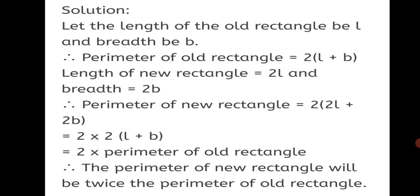We wrote the perimeter formula for the old rectangle and the new rectangle. Since the dimensions are doubled, we substituted 2L for length and 2B for breadth. We then substituted 2(L + B) as the perimeter of the old rectangle, and found that the perimeter of the new rectangle is twice the perimeter of the old rectangle.